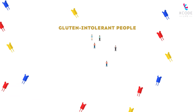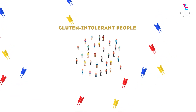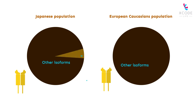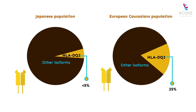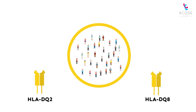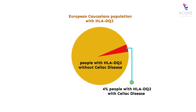Out of the several subtypes, only HLA-DQ2 and HLA-DQ8 attach to the gluten protein, so all gluten intolerant people have either of these subtypes. The prevalence of these two isoforms varies between different population groups. For example, HLA-DQ2 is found in less than five percent of Japanese people but in around 25 percent of European Caucasians. While almost all people with gluten intolerance carry HLA-DQ2 or HLA-DQ8, the reverse is not true — only four percent of Caucasians with HLA-DQ2 develop celiac disease.